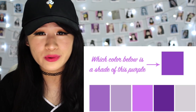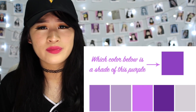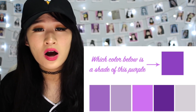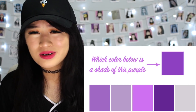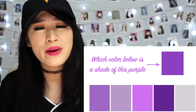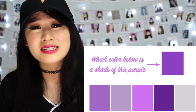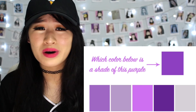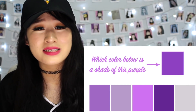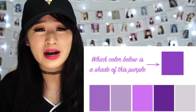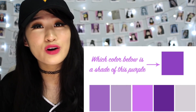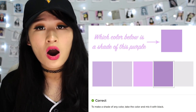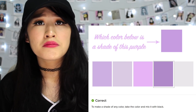Which color below is a shade of this purple? I don't know, they all look different. A shade could be darker or lighter. It might be the first one — it's not the second or third. Maybe it's the fourth one because it looks kind of similar but just a bit darker, like a shade darker. And it's obviously not the fifth one because that looks way too gray. I'm just gonna count to ten and pick — it's the fourth one. We got it correct! To make a shade of any color, take the color and mix it with black, so it goes darker.